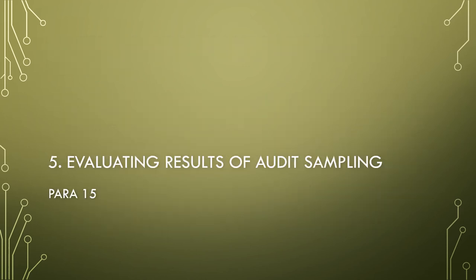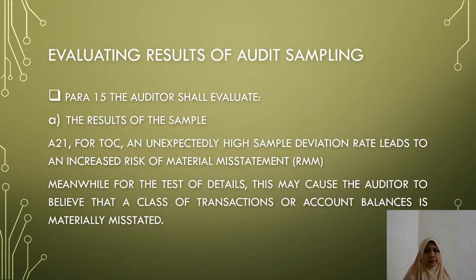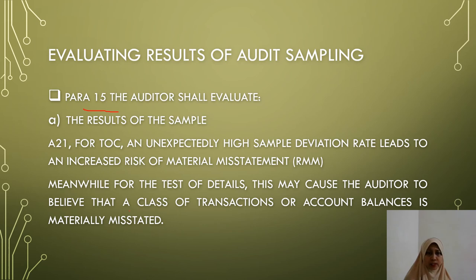Finally, the fifth requirement is evaluating the results of audit sampling. Paragraph 15 states the auditor shall evaluate the results of the sample. Under A21, for test of controls, an unexpectedly high sample deviation rate leads to an increased risk of material misstatement. Meanwhile, for test of details, this may cause the auditor to believe that a class of transactions or account balances is materially misstated.